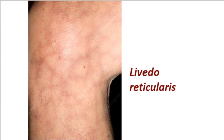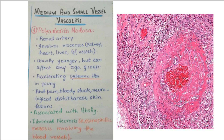Livedo reticularis is the mottling and purplish discoloration of the skin caused by swelling of the venules, usually due to obstruction of capillaries by small blood clots. This necrosis, inflammation, and vessel occlusion leads in the majority of patients to arteritis of the vasa nervorum — the channels of vessels that supply the peripheral nerves. When the vasa nervorum are affected, it leads to neuropathy that is symmetrical and involves both sensory and motor function loss.